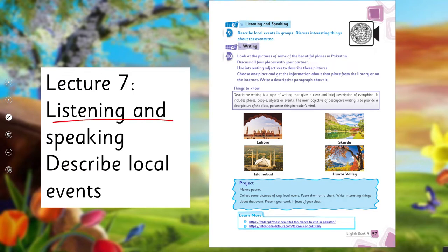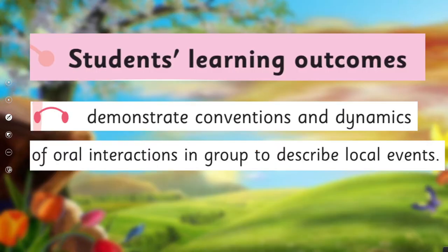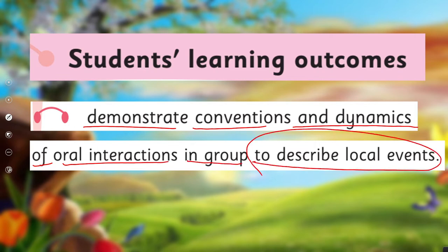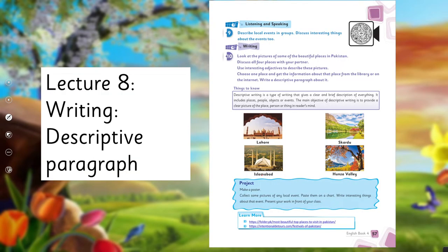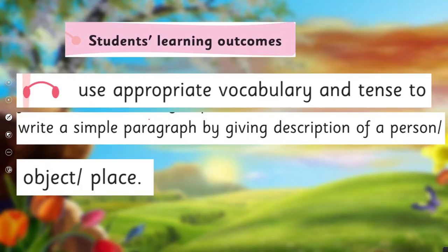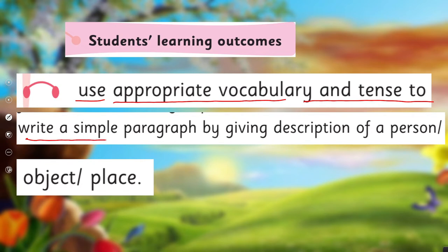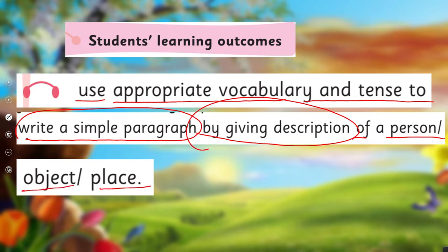Lecture 7, under the title of listening and speaking, we'll learn to describe local events and cover the SLO to demonstrate conventions and dynamics of oral interactions in a group to describe local events. Lecture 8, under the title of writing, we'll learn to write a descriptive paragraph and cover the SLO to use appropriate vocabulary and tense to write a simple paragraph giving description of a person, object, or place.